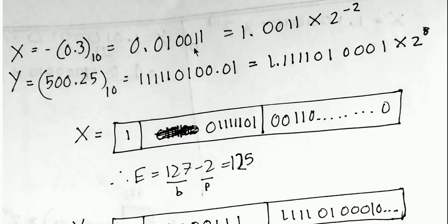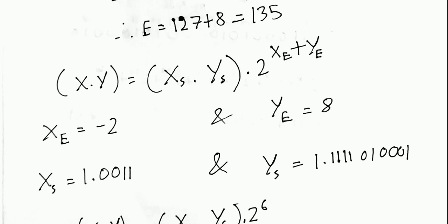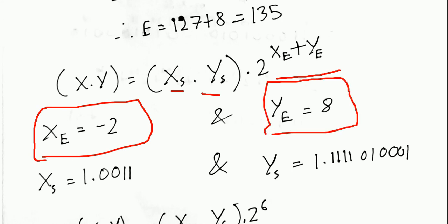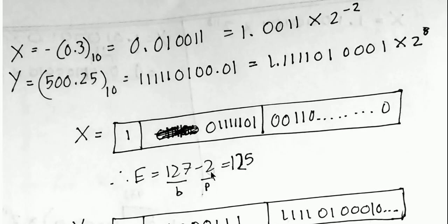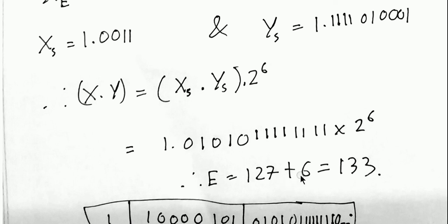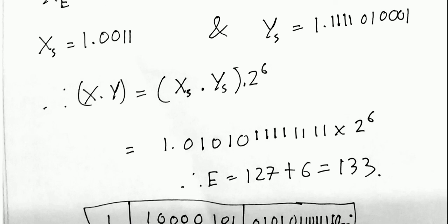Here we have a multiplication example. So you convert it into binary using the same method that you did. And then you will get an x and y, the exponents, which is same. Here is the new thing, the formula. X times y is equal to Xs single precision, Ys single precision into 2 to the exponent of x and exponent of y. You already know the exponent of x which is minus 2. You also know the exponent of y which is 8. How did I get that? From here. Minus 2 and 8. And these are the numbers. Which numbers? These numbers. So that's xs and that's ys. And you do a very simple multiplication, just like you multiply which you learned in elementary.